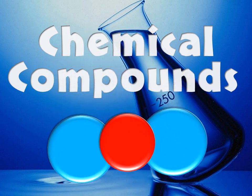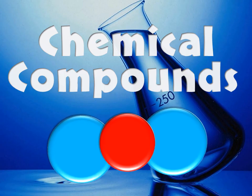For us to better understand the photosynthesis equation and what's going on inside of plants, it's important for us to understand chemical compounds. Chemical compounds are when two or more atoms combine. Let's take a look at a few of the important chemical compounds in the photosynthesis equation.